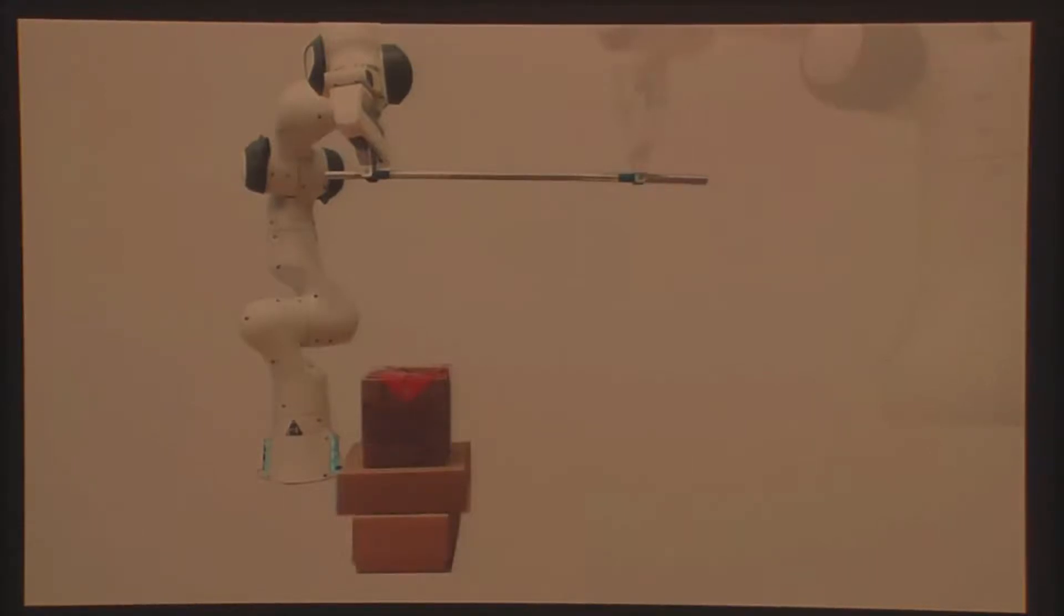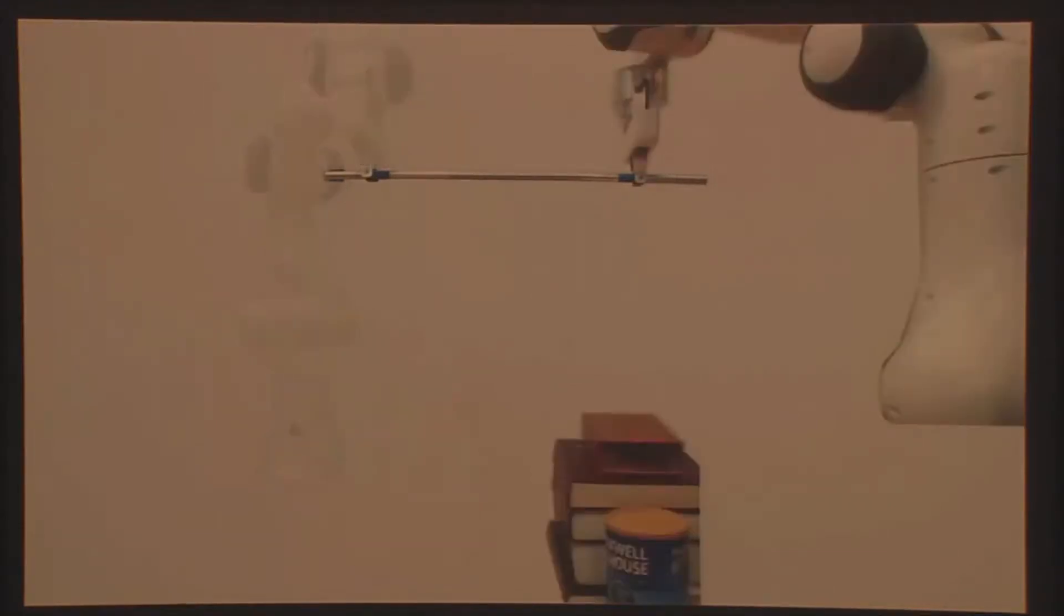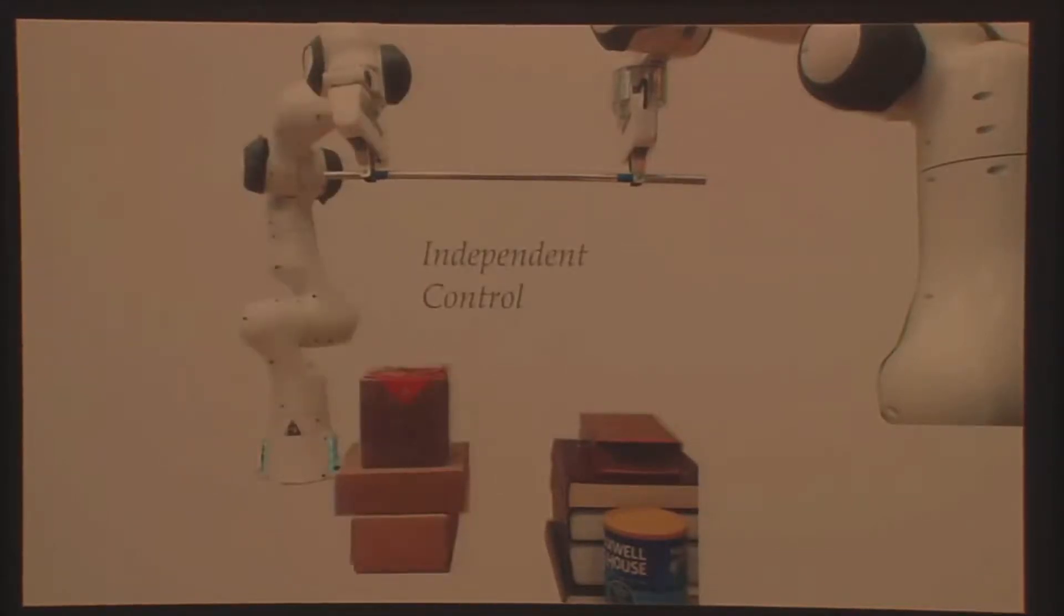While they have a common objective, they have different information about the world around them. The robot on the left sees this pile of boxes. By contrast, the robot on the right sees this pile of books. In reality, both obstacles are there.